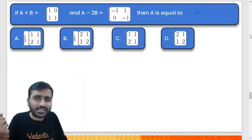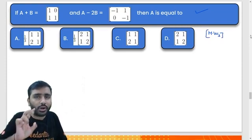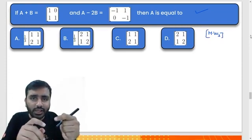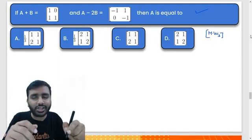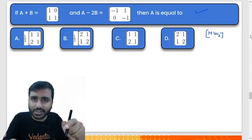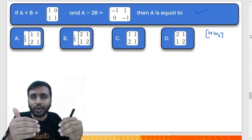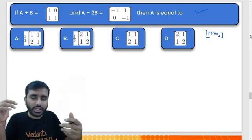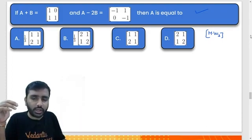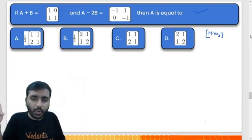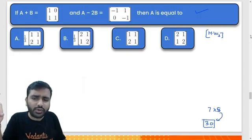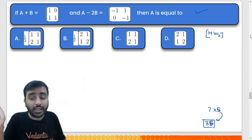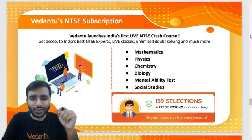The answer to this question is homework number 3 — give me the answer in the comment box. Homework number 1, homework number 2, homework number 3 — all of you have to give me the answers. We solved 7+ problems in this class; try to do at least 30–35 problems at home, about 4–5 times what we did here.